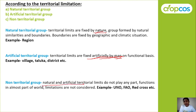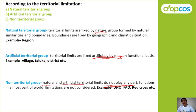Next is the non-territorial group. In this type, natural and artificial territorial limits do not play any role — they have no part. These groups function in almost all parts of the world for the welfare of people living in the world. There is no territorial limitation. For example: UNO, FAO, Red Cross, etc. These organizations work for the welfare of the world — there is no natural or artificial territorial limit, and this group functions in all parts of the world.